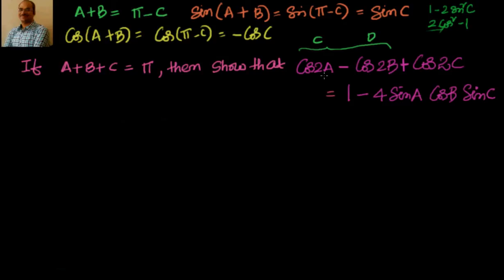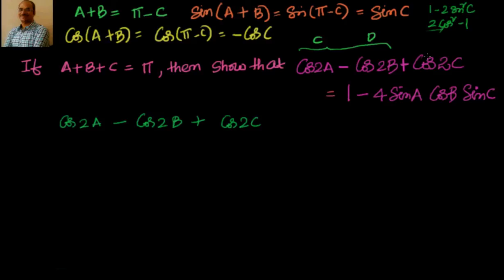So cos2a minus cos2b — I will write it again here. This is nothing but cos2a minus cos2b plus cos2c. Our approach is very simple: apply the transformation on the first two terms and then manipulate the third term in such a way that you can take something common from the first and the second. Then you can apply again the transformation, and you should be able to get the product of the trigonometric ratios. Now, this is nothing but cosC minus cosD. What is the formula for cosC minus cosD?